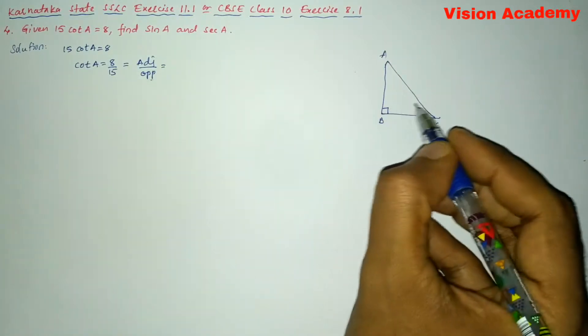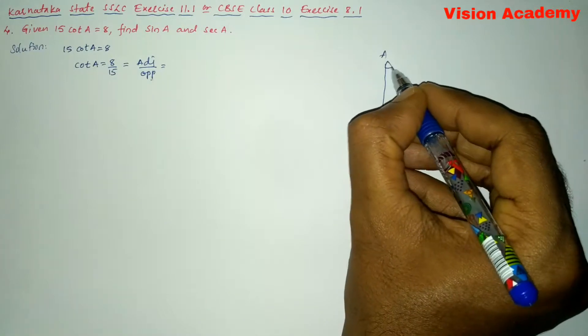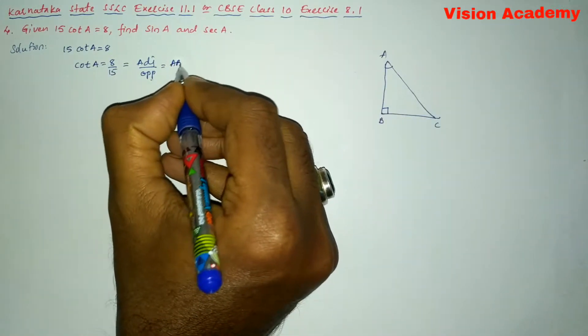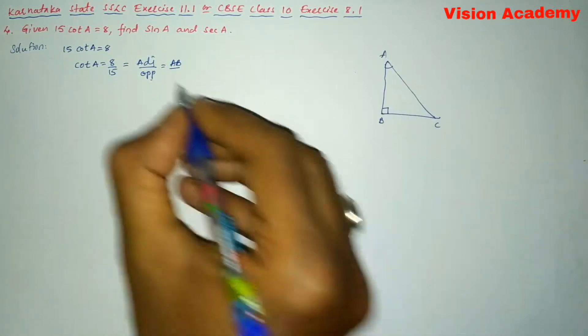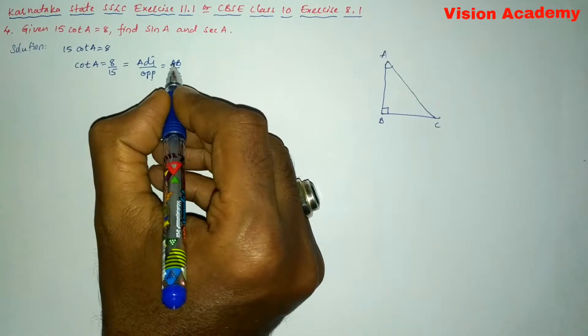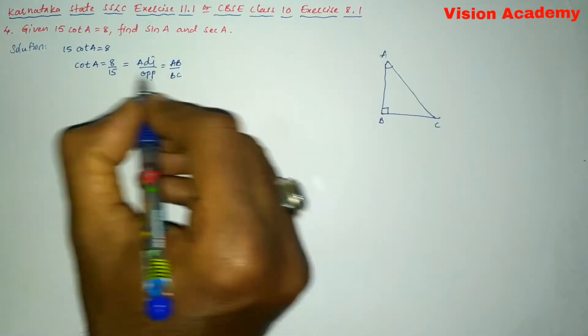So here, adjacent with respect to this angle A is AB. Here we will write AB, and opposite is BC. So here we will write BC. So here we can say AB is equal to 8 and BC is equal to 15.